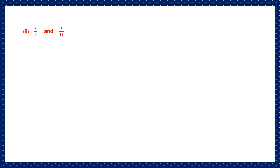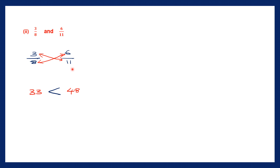For question 2, we have 3 by 8 and 6 by 11. Cross multiplication means multiplying numerator of one fraction by denominator of the other. So 3 into 11 — 3 elevens are 33. And 6 into 8 — 8 sixes are 48. Looking at 33 and 48 — 48 is greater. Since 33 represents the first fraction and 48 the second, 6 by 11 is greater than 3 by 8.